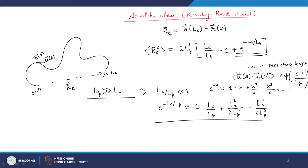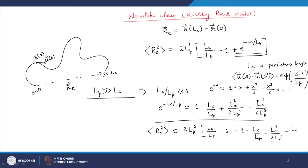Substituting this expansion into the mean square end-to-end distance expression: Re² ≈ 2LP²[(LC/LP) − 1 + 1 − (LC/LP) + (LC²/2LP²) − (LC³/6LP³)]. After cancellations, we end up with Re² ≈ LC²[1 − LC/(3LP)].